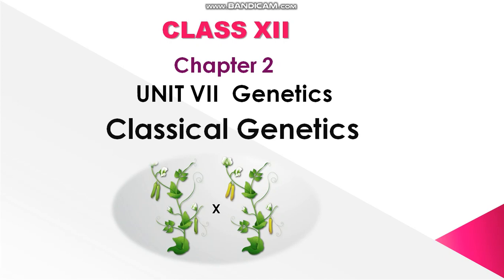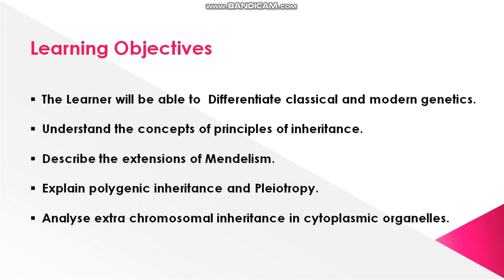The first topic is known as Classical Genetics. Learning Objectives: The learner will be able to differentiate Classical and Modern Genetics, understand the concept of Principles of Inheritance — the inheritance means how the genetic character is passed from one generation to another generation — describe the extension of Mendelism, explain Polygenic Inheritance and Pleiotropy, and analyze Extra-Chromosomal Inheritance in Cytoplasmic organelles.